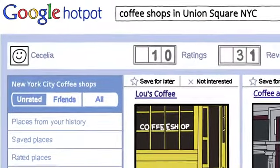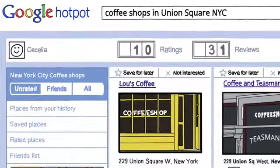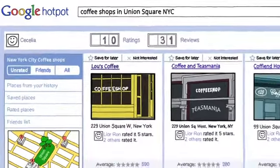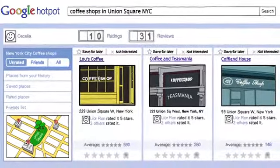We just introduced a new recommendation engine called Google Hot Pot. Using Hot Pot, you can easily rate places, whether on your desktop or using our mobile version on your Android.